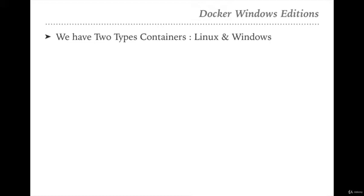Right now we have two containers available with Docker editions. The first is the Linux container, which is native to Docker. The second is the Windows container. Windows containers can be used only with Windows machines, but Linux containers can be used with Windows machines, Linux machines, and Mac as well.